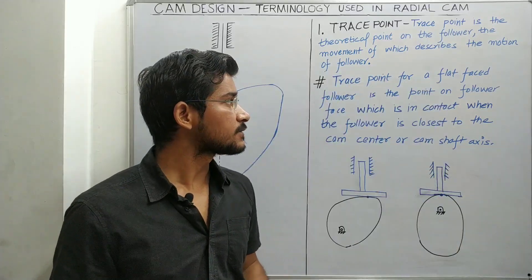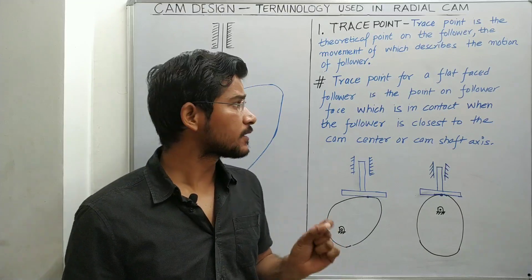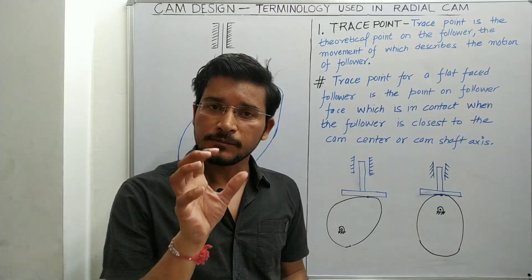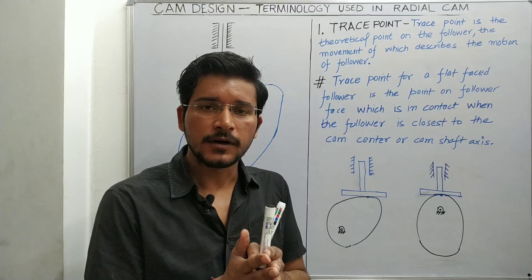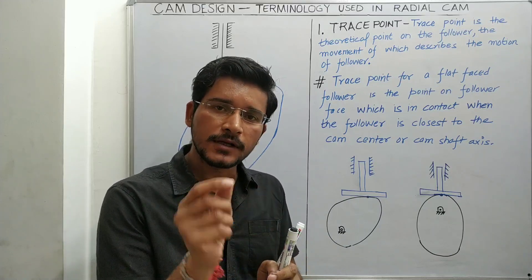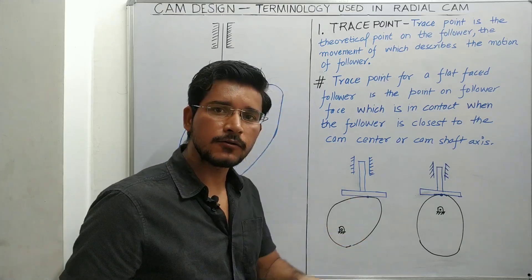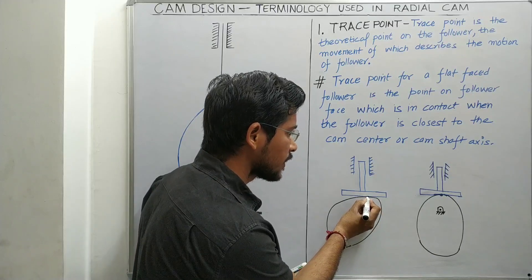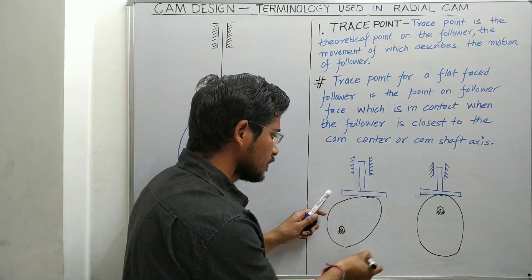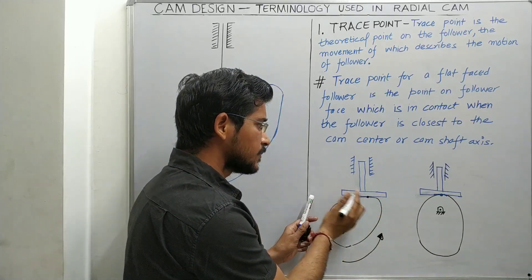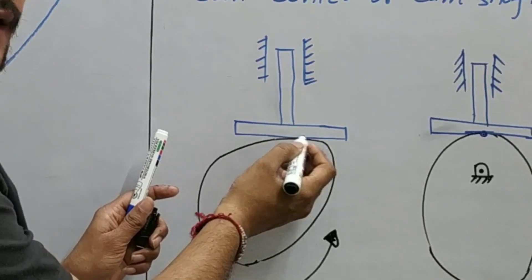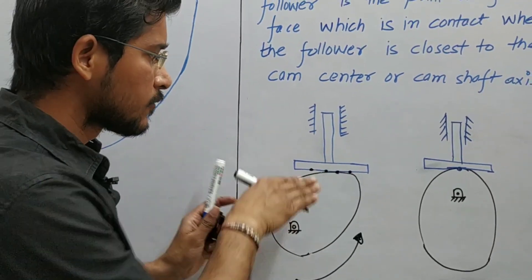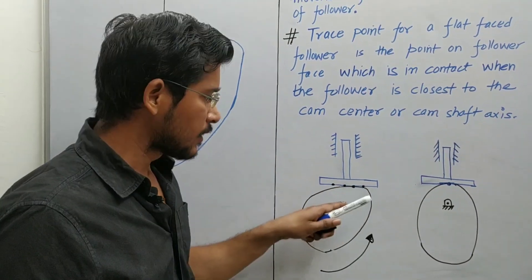The trace point for a flat faced follower is the point on the follower face which is in contact when the follower is closest to the cam center or camshaft axis. This means for the flat faced follower, the trace point is this point of contact. However, the point of contact with the cam is changing as the cam rotates.